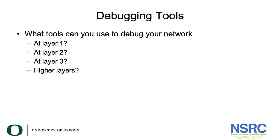Let's have a look at debugging tools. What tools could you use to debug your network at layer one? Layer one is the physical layer, which means you're looking at things like cables, fibers, and radio spectrum.